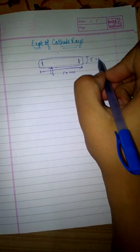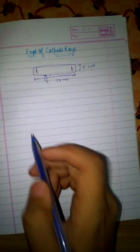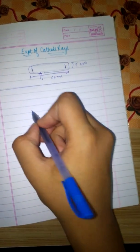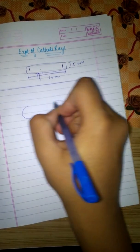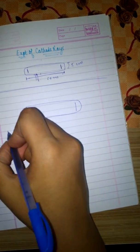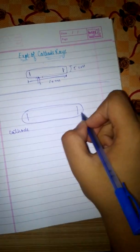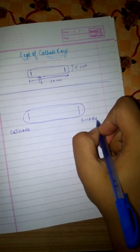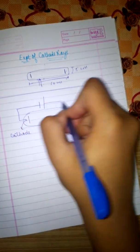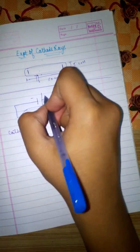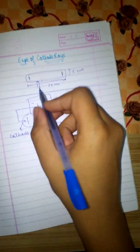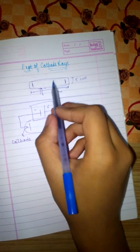So what J.J. Thompson had done in his experiment: he had a discharge tube with two electrodes as usual - one cathode and the other one anode. They both were connected to a very high voltage source. This tube is always evacuated.